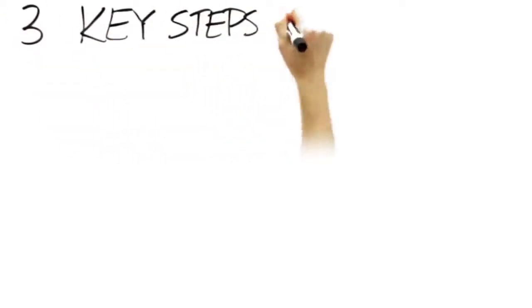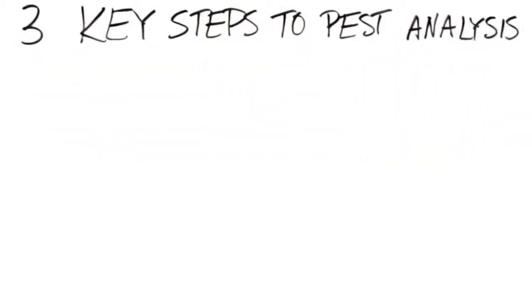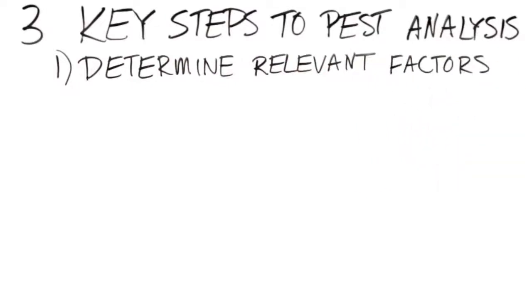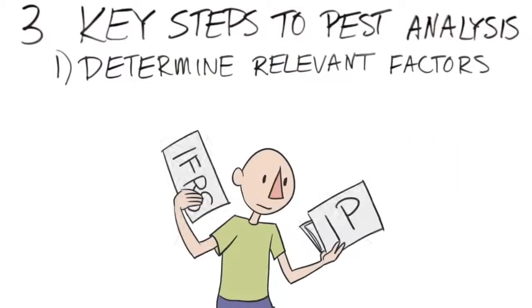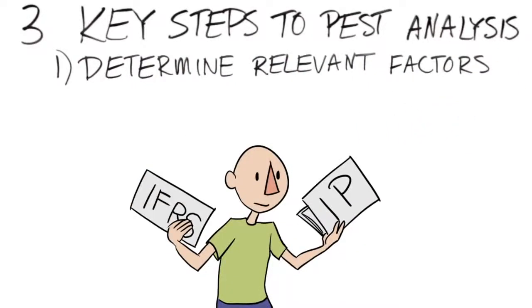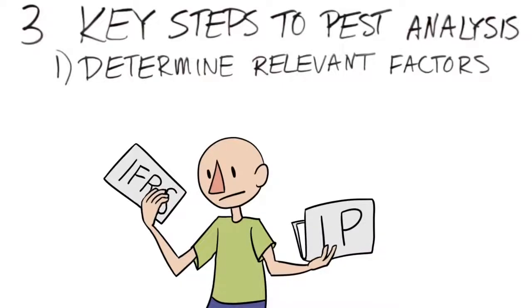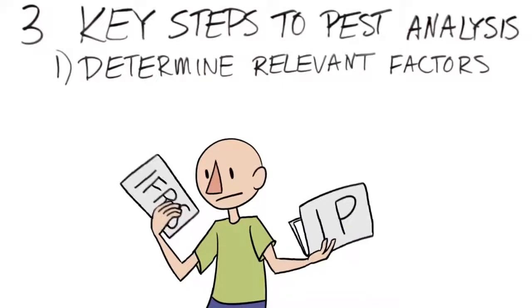As illustrated by Rolls-Royce, there are three key steps to a PEST analysis. First, determine the relevant environmental factors to assess. For example, are intellectual property laws relevant to your business in that country? An accounting firm opening an office in France probably doesn't need to spend time understanding French IP laws, but probably needs to be very aware of whether France has adopted the International Financial Reporting Standards, IFRS.